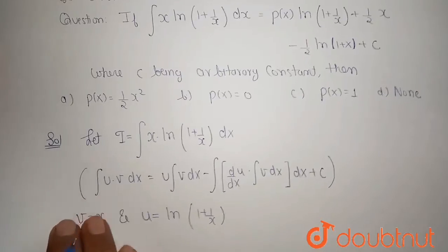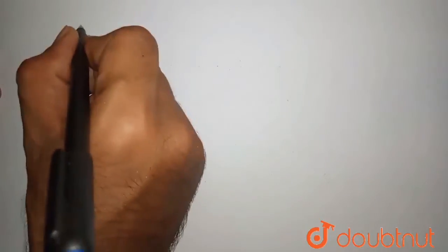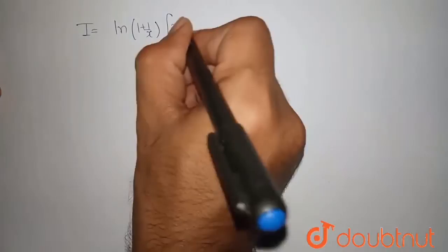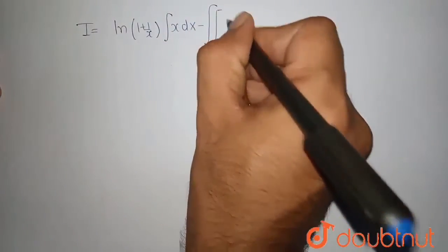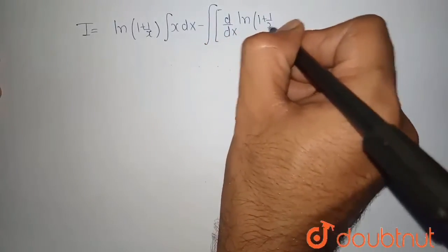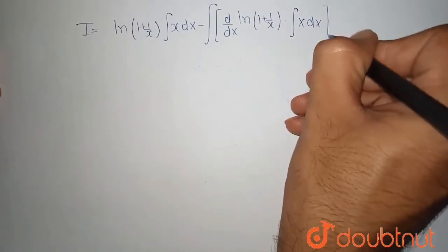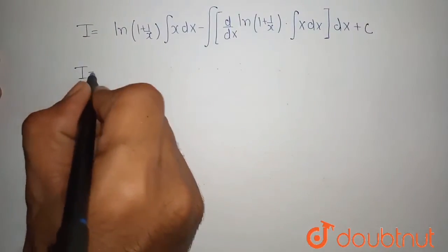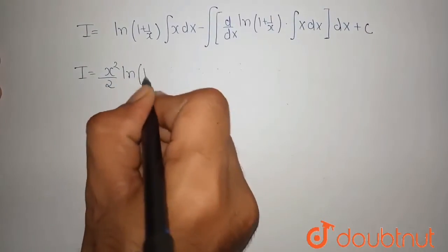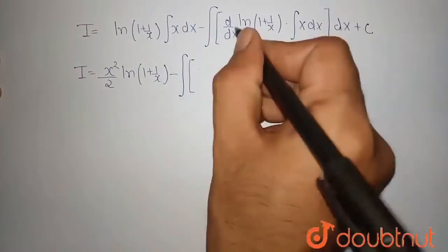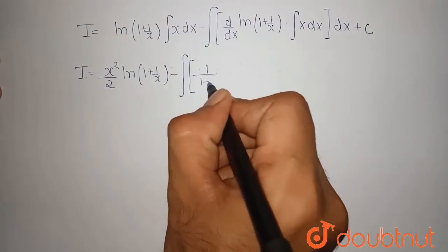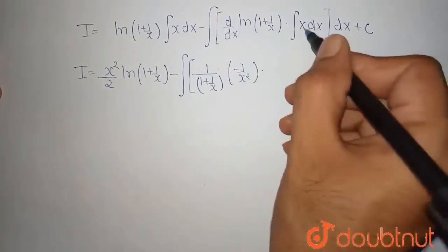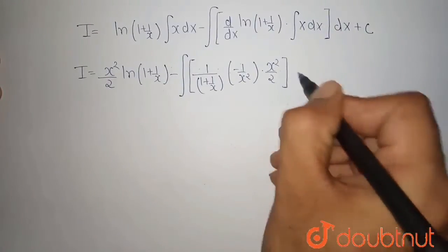So, putting these in and using integration by parts: I equals ln(1 + 1/x) times integration of x dx, minus integration of d/dx of ln(1 + 1/x) times integration of x dx, whole dx, plus c. The integration of x is x²/2. Now, d/dx of ln(1 + 1/x) becomes 1/(1 + 1/x) times d/dx of (1 + 1/x), which is minus 1/x² times x²/2 dx plus c.